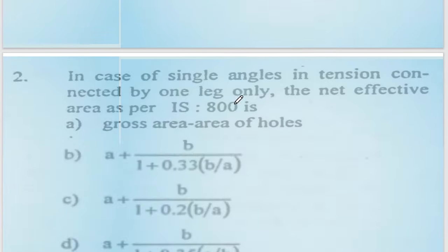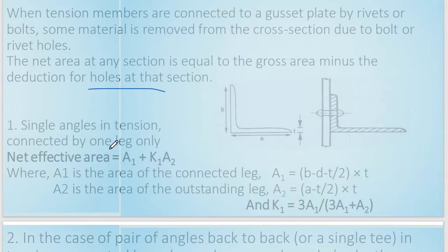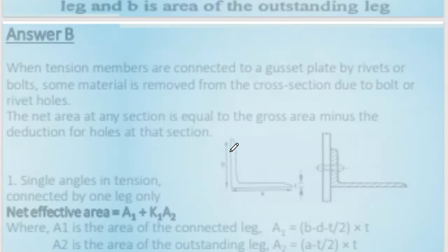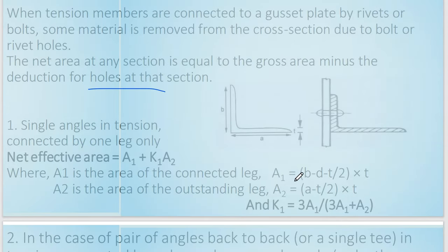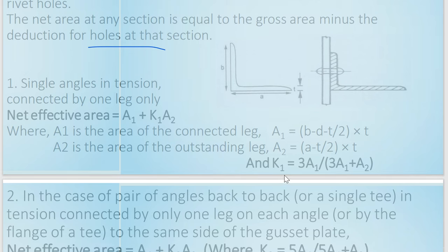For a single angle in tension, the net effective area formula is A1 plus K1·A2, where A1 is the area of the connected leg (computed as: (b minus d minus t/2) times t), and K1 equals 3A1 divided by (3A1 plus A2).